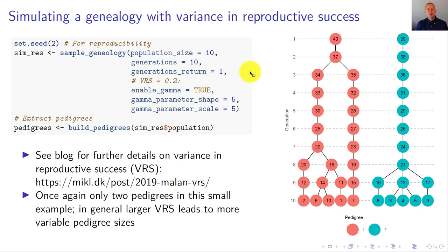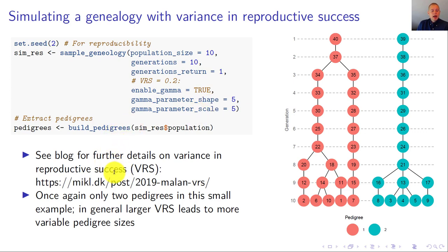We can introduce variants in reproductive success (VRS). We do the same simulation as before but enable gamma — the VRS is implemented via a gamma distribution, and we set the parameters accordingly. I have written a blog post on these VRS parameters; the parameter value of five to obtain a VRS of 0.2 may seem strange, but it is explained in that blog post.